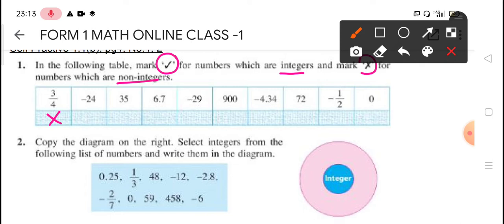Number two, negative 24. 24 is a whole number, yes. 35, yes, whole number. 6.7, 6.7 is a decimal, so non-integer. Next, negative 29, yes, integer because 29 is whole number. 900, yes. Negative 4.34, decimal, non-integer. Next, 72, yes. Next, negative 1 over 2 is a fraction, also non-integer. And lastly, 0. Yes, 0 consider whole number, so 0 also integer. So if you get all correct, it will be very good.